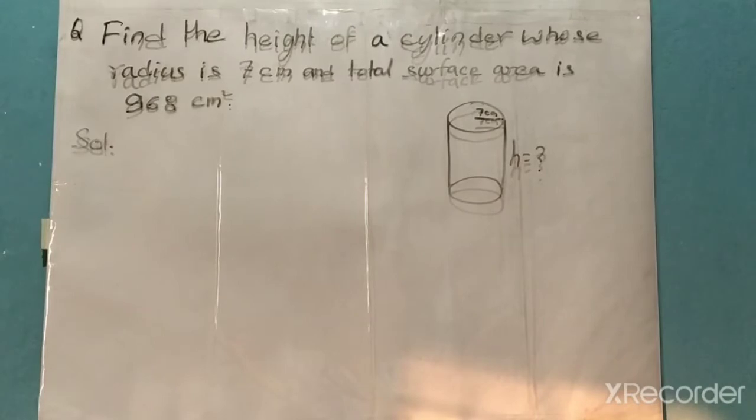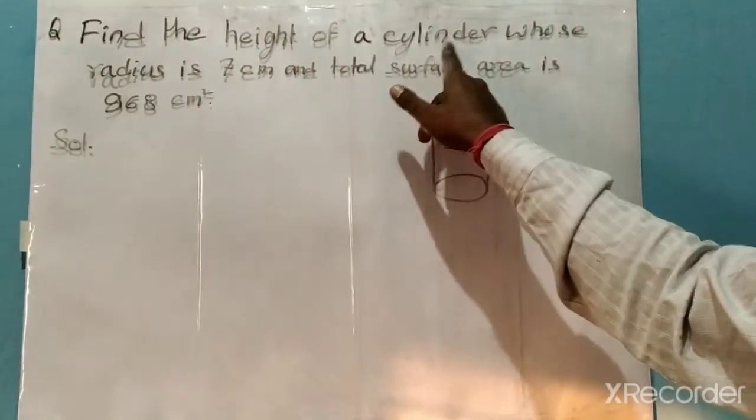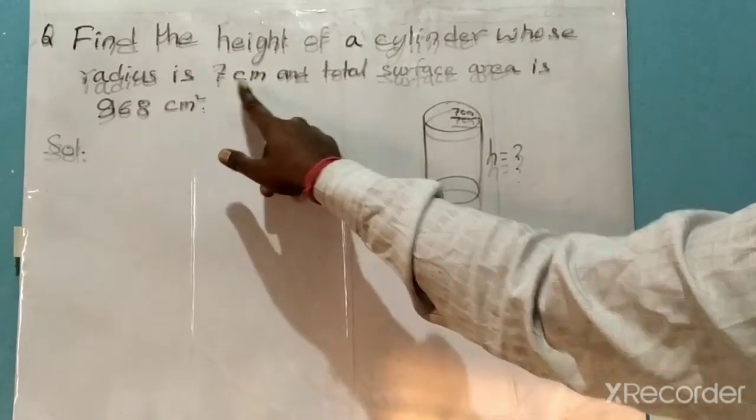Let's discuss the problem. The question is: find the height of a cylinder whose radius is 7 centimeters and total surface area is 968 square centimeters.